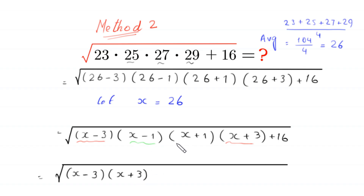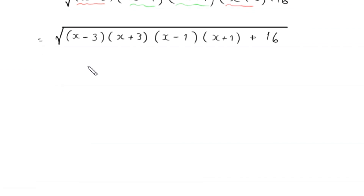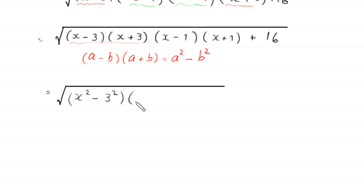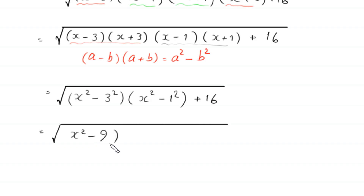We combine pairs: (x-1)(x+1) and (x-3)(x+3) plus 16. By using the algebraic identity (a-b)(a+b) = a²-b², (x-3)(x+3) becomes x²-9 and (x-1)(x+1) becomes x²-1. So the expression becomes square root of (x²-9)(x²-1)+16.